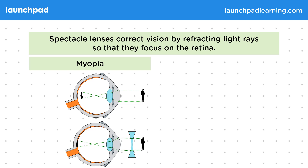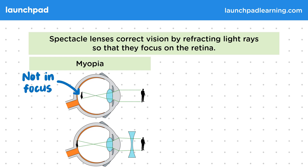Here's how spectacles would fix myopia — remember, myopia is short-sightedness. This image shows what happens in myopia: the image is produced too far forward, not on the retina, so it's not in focus. This bottom image shows a spectacle lens in front of the eye. What this does is bend the light, refracting it slightly outwards.